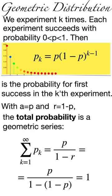An application in statistics is the geometric distribution, where p is the probability of success in an experiment. The probability of success after k experiments is then p^k, and this adds up to 1 using the geometric series.